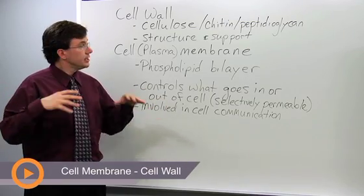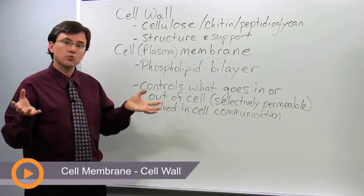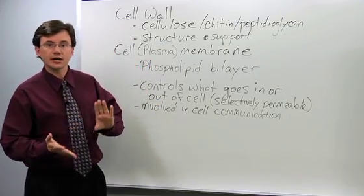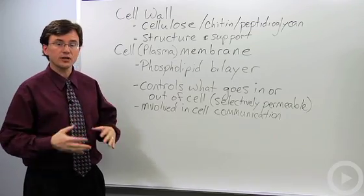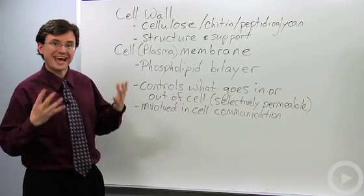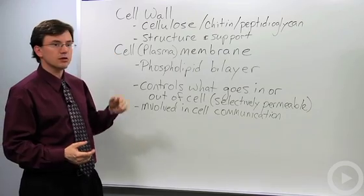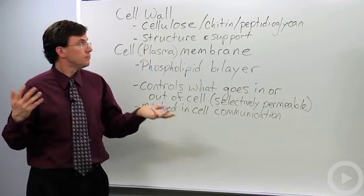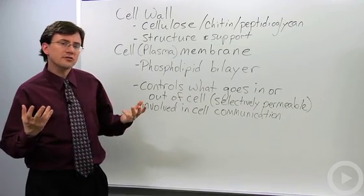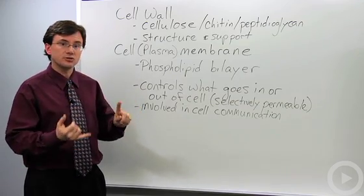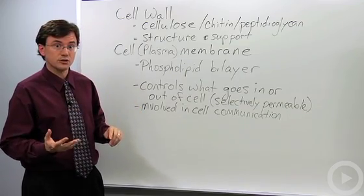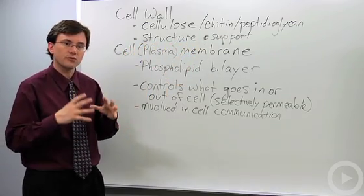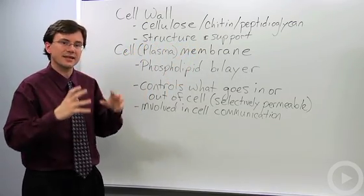The outside of a cell in many kinds of cells is covered with a rigid structure called the cell wall, whether you're a plant, a fungi, many of the bacteria, as well as the protist group called algae. The cell wall is made out of a material called cellulose, chitin, or peptidoglycan. There are others — some algae even use glass; silicon dioxide is their cell wall. In general, they all provide structure and support for the cell inside.